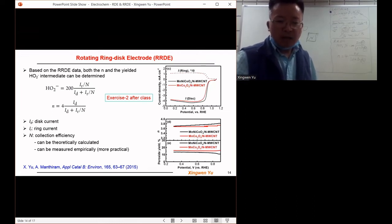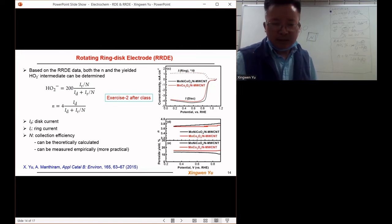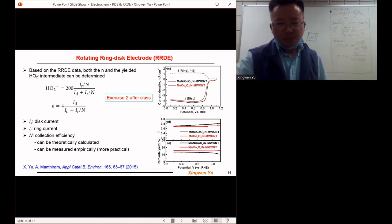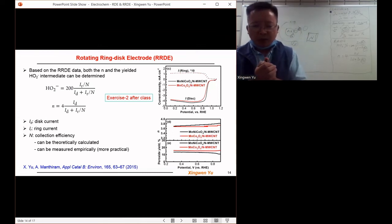So we can see that both the N number, the charge transfer number N, and the percentage of the intermediate species vary with the potential applied to the electrode. So we can read the information along the range of the potential we applied to the electrode.